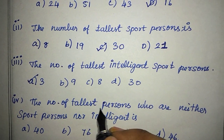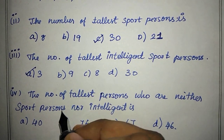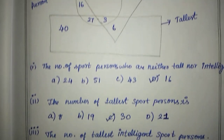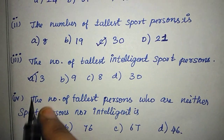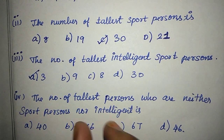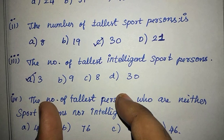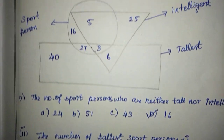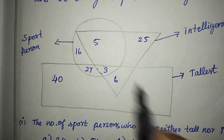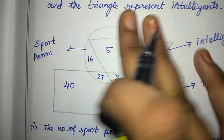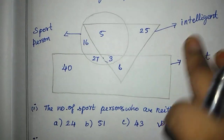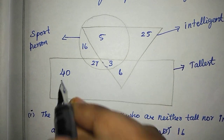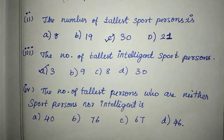Next: the number of tallest persons who are neither sport person nor intelligent. The tallest one is sport percent circle and intelligent — two circles, triangle. If we look at rectangle, it is 40. So 40 is the right answer. And option A, 40 is the right answer.